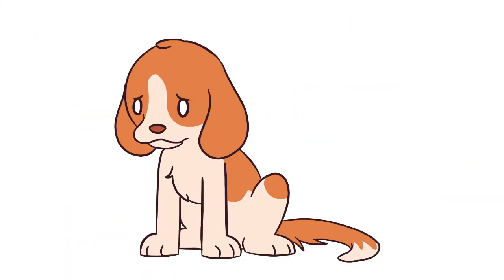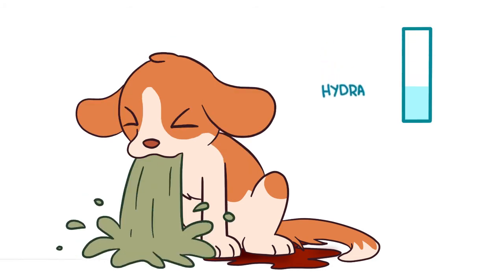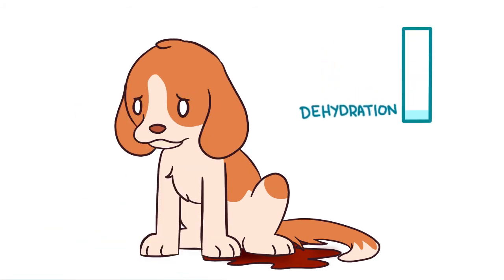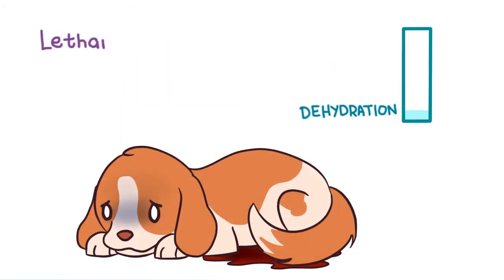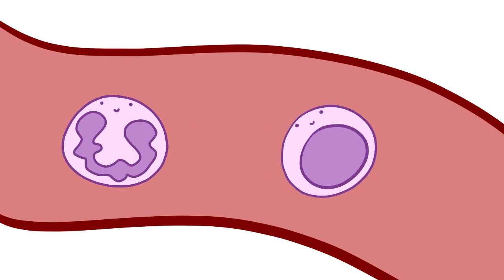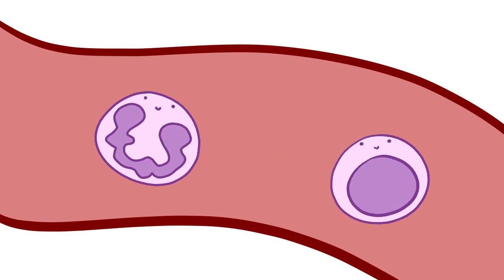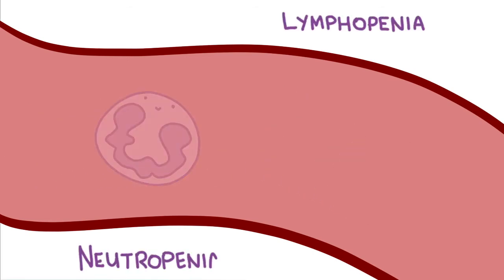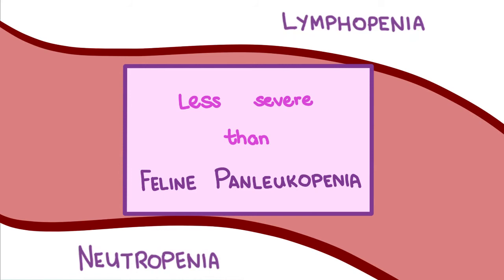Vomiting also occurs, and together with the bloody diarrhea, can rapidly lead to dehydration. The pup becomes lethargic from the protracted vomiting and will not want to eat. Destruction of the progenitor cells in the lymphoid tissue leads to lymphopenia and neutropenia, though much less severe than that caused by feline panleukopenia.